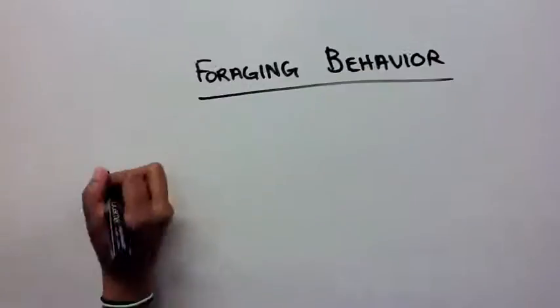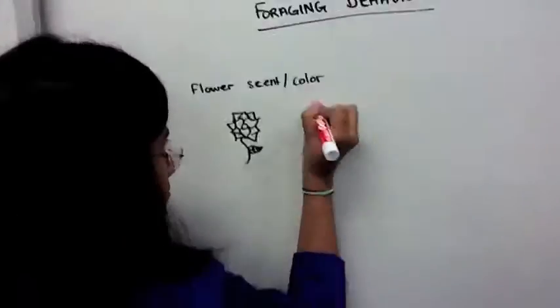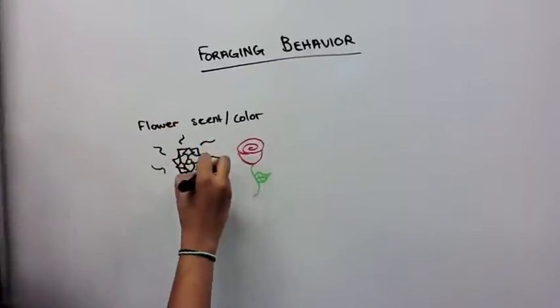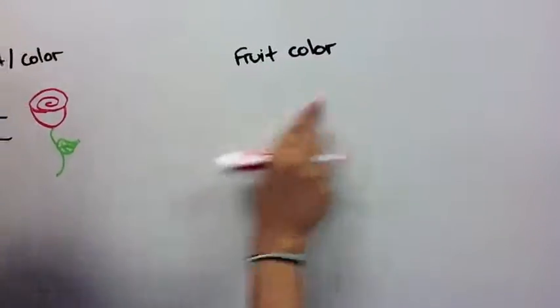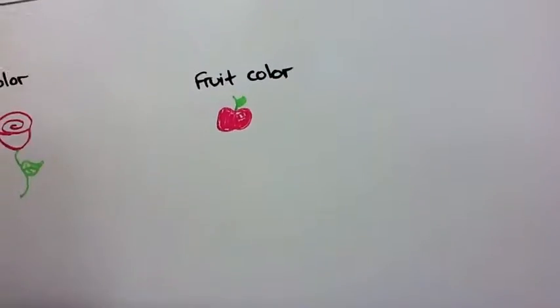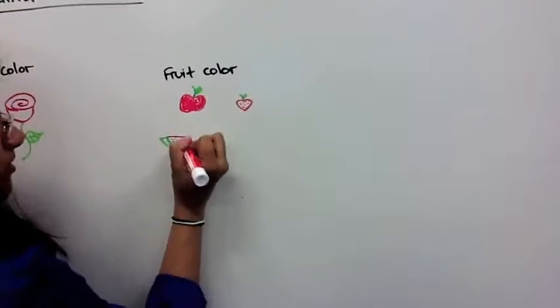General animal behavior includes foraging behavior. Foraging behavior is a response to visual and chemical stimulus. Flower color and scents are signals that animals use to locate flowers. Fruit colors also help animals locate it and help differentiate it from toxic ones. There are all sorts of fruits out there.